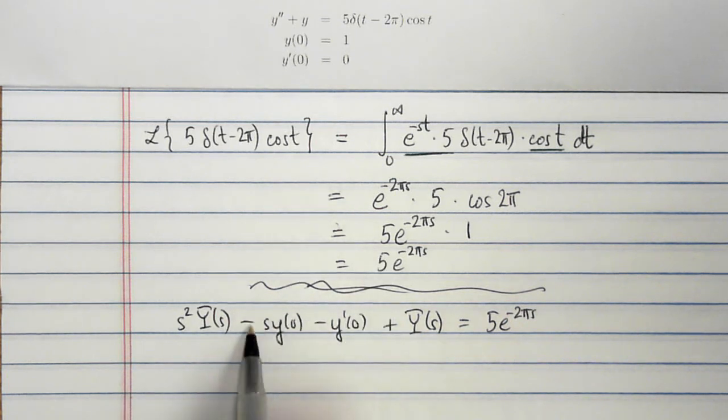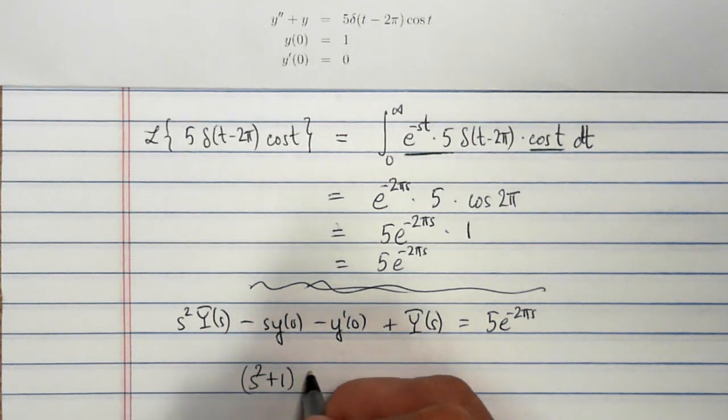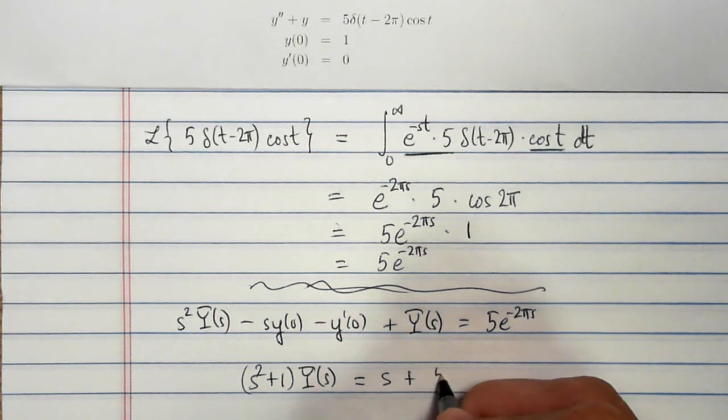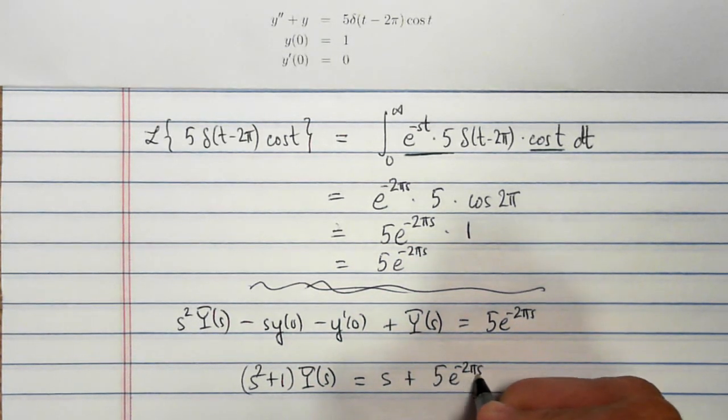So with this, this part is going to be minus s. I'll bring that over. That's 0. So I get s squared plus 1 times y of s is equal to s plus 5 e to the minus 2 pi s.